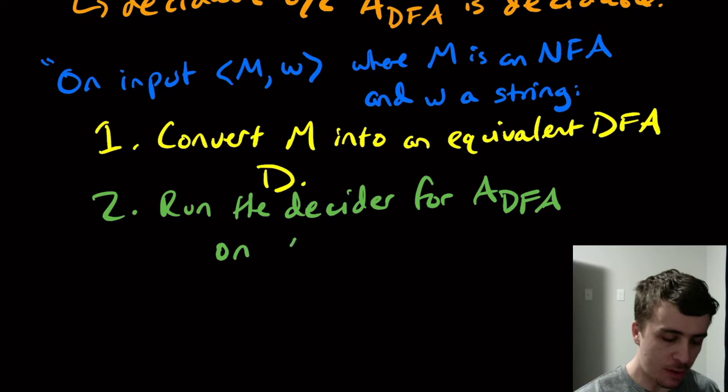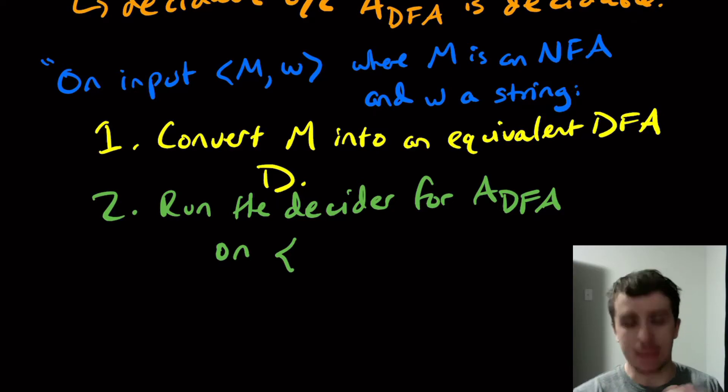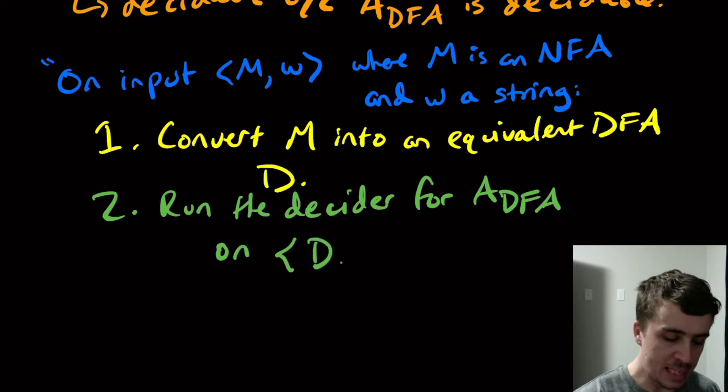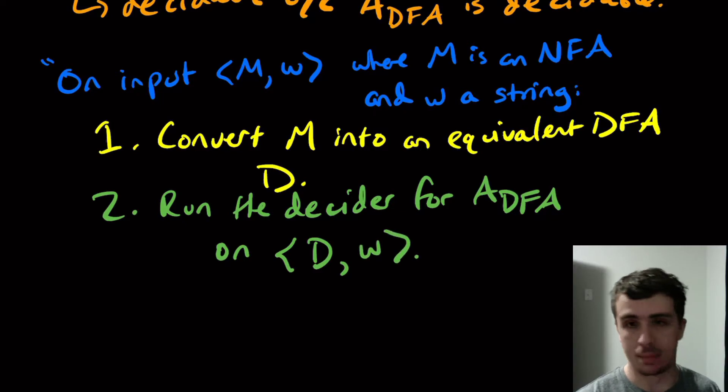Well, I need to provide it a string, and I'm going to provide it a machine and an input. So I need to provide it a DFA because that's what A_DFA says here and the input for it. And it's pretty clear it's going to be D, the DFA we just made, and the input string because we want to answer the same thing as whether the NFA accepted the input or not.